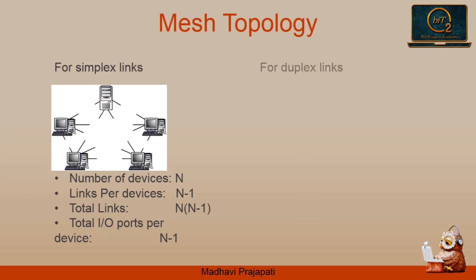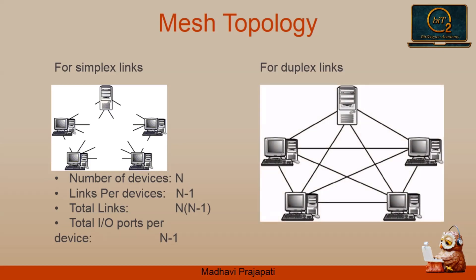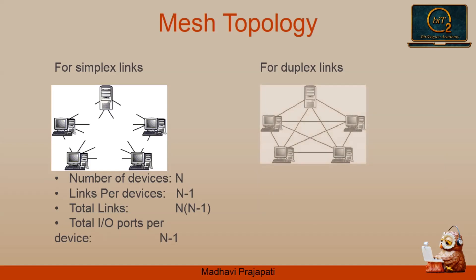In a duplex link of mesh topology, every device sends and receives data using the same link, as you see in the figure. Now let's calculate the number of physical links and input-output ports needed for duplex links.